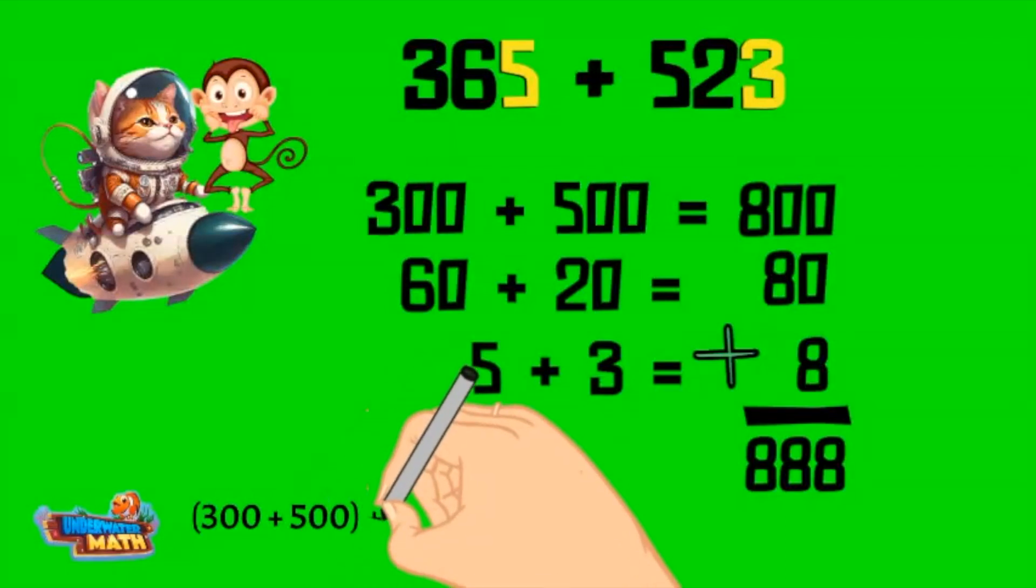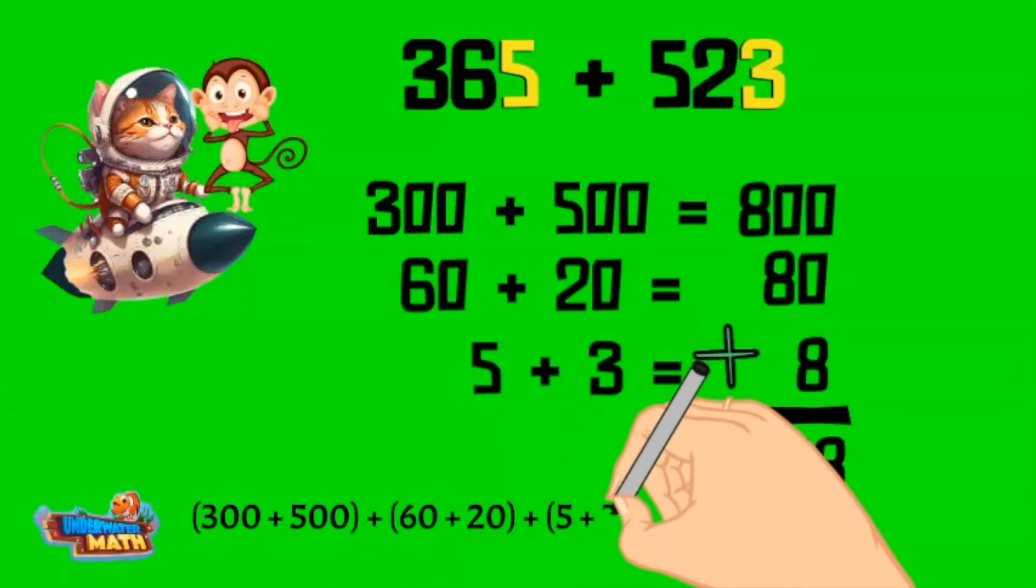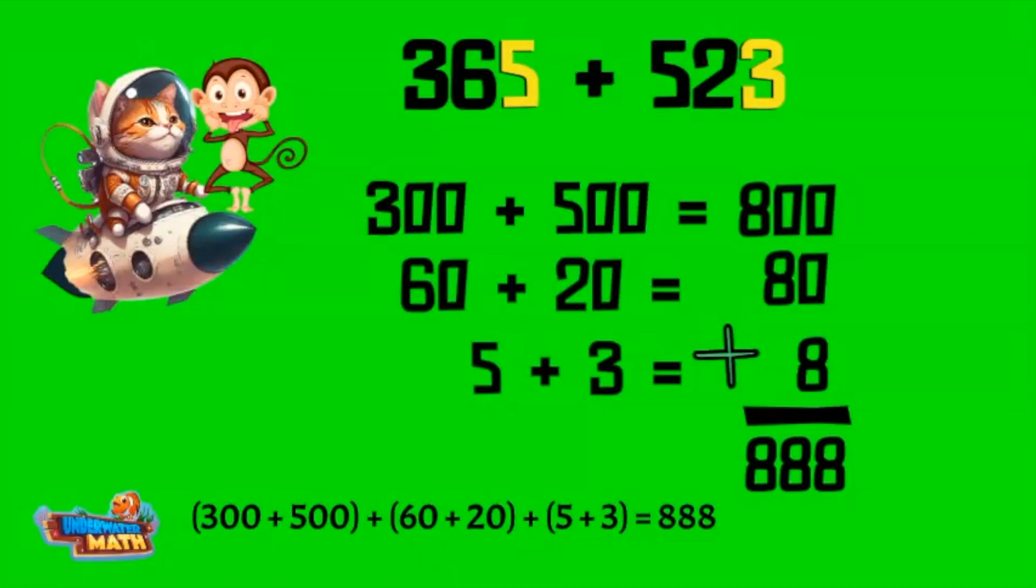Written as an equation, the problem looks like this: 300 plus 500 plus 60 plus 20 plus 5 plus 3 equals 888.